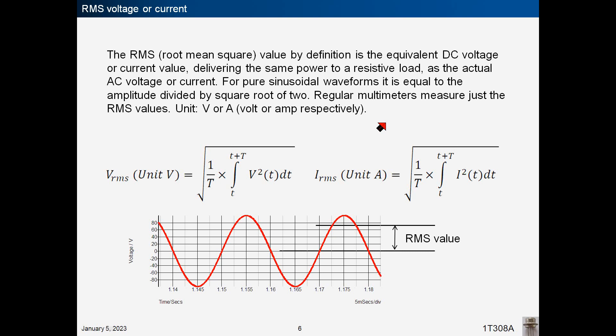The RMS or root-mean-square value, by definition, is the equivalent DC voltage or current value, delivering the same power to a resistive load as the actual AC voltage or current. The RMS voltage or current is found by averaging the squared waveform over the period and taking the square root. For pure sinusoidal waveforms, it is equal to the amplitude divided by the square root of 2. Regular multimeters measure just the RMS values. The units are volts or amperes respectively.